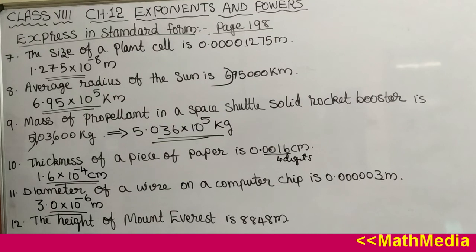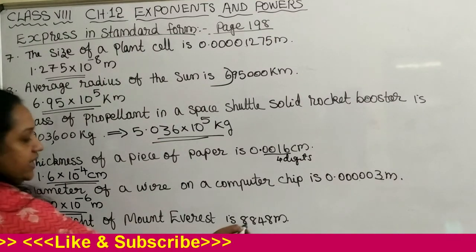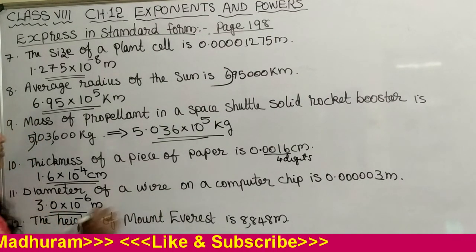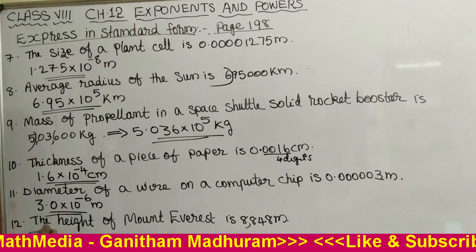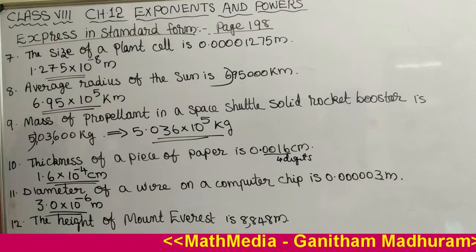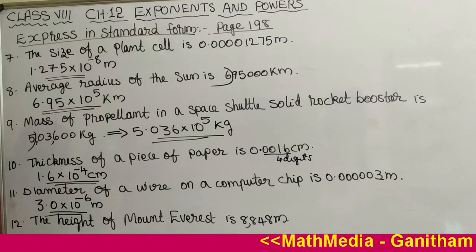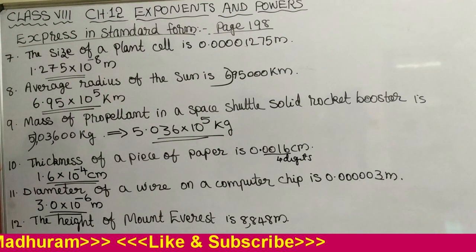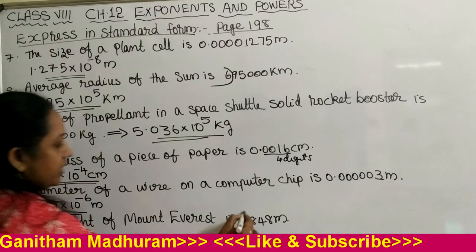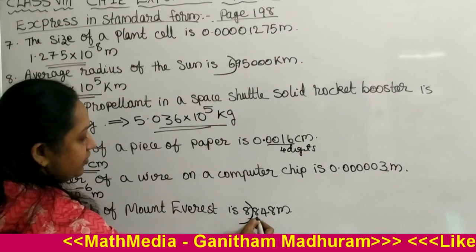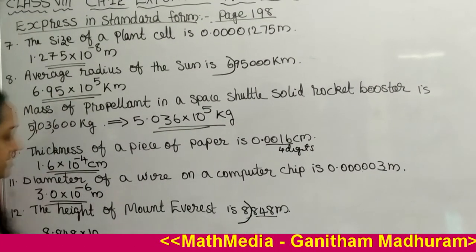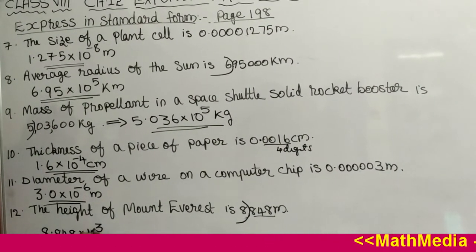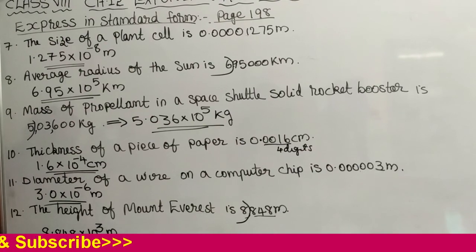Last one: the height of Mount Everest is 8,848 meters, which is a whole number. After the first digit we put the decimal point: 8.848 into 10 raised to the power. Remove the first digit and count the remaining digits — there are 3 digits. So we write 10 raised to 3 meters. The standard form is 8.848 into 10 raised to 3 meters.